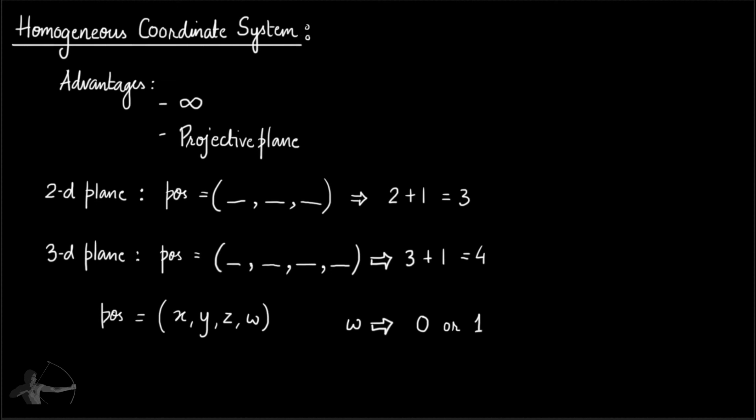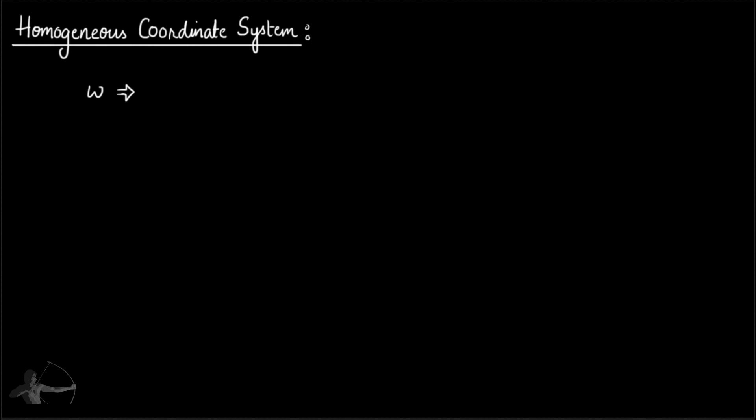But how we will decide that it should be 0 or 1? This w value will be 0 if we are representing a vector or a normal value. Because a vector or a normal value x, y, z and 0. And when it will be 1, it will be 1 when we are representing a vector or a normal value.